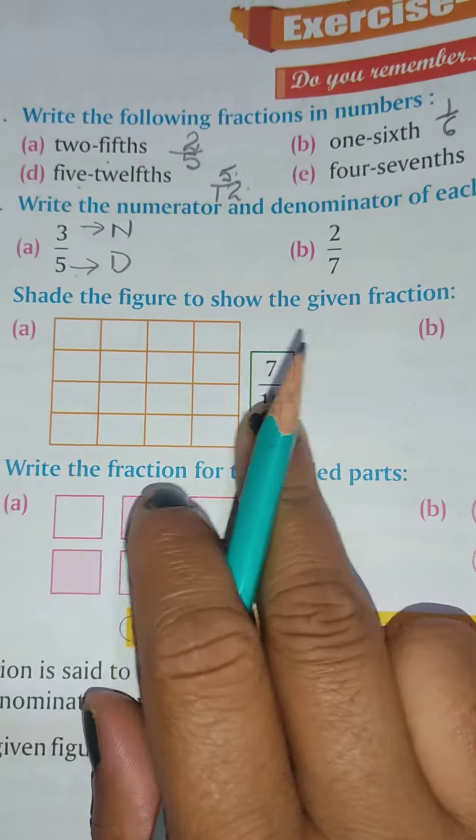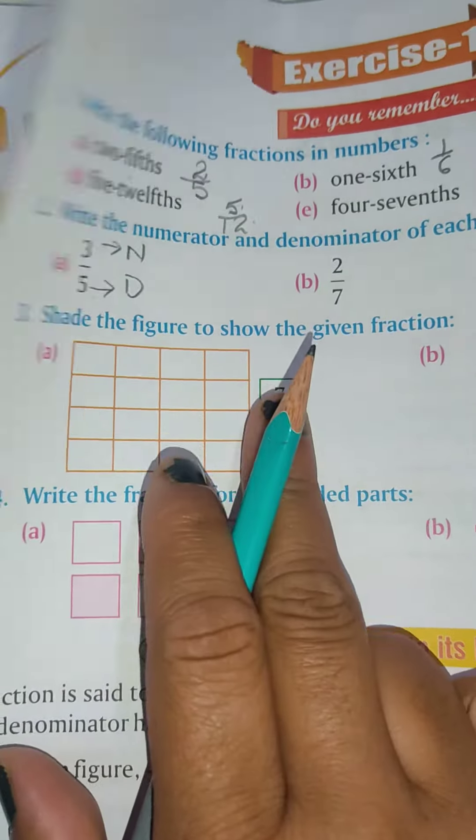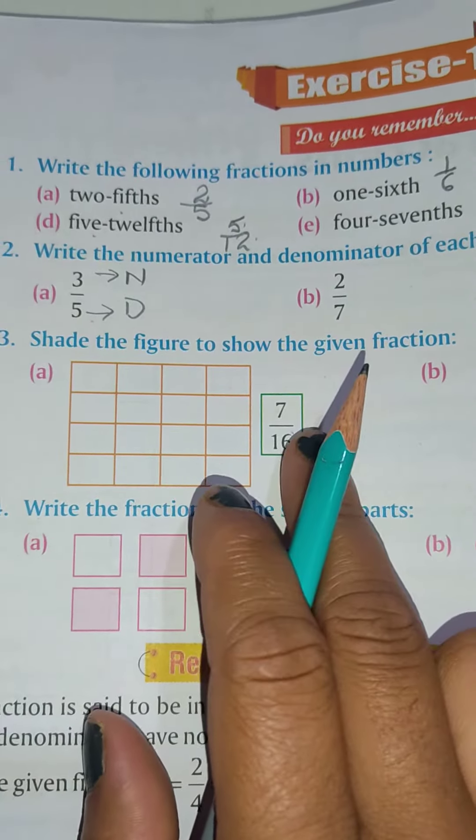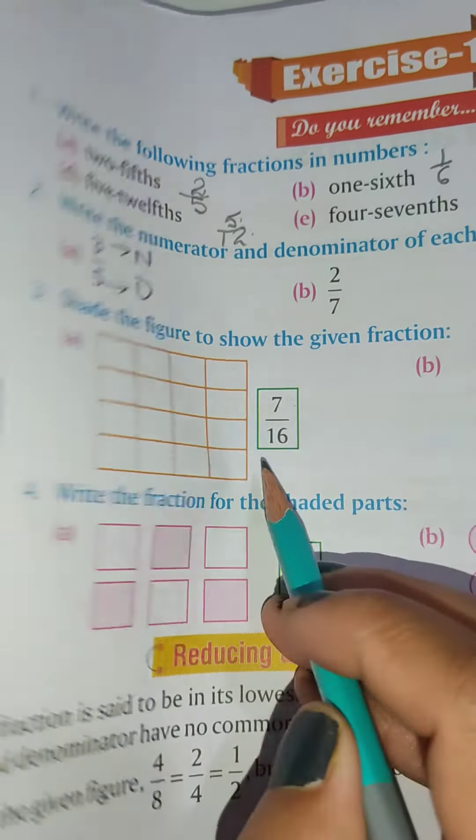Now shade the figure to show the given fraction. You are given 7 upon 16. So 7, whatever numerator is, that is what you have to shade. Jo bhi aapke paas numerator hoga, utne hi parts aapko shade karne.